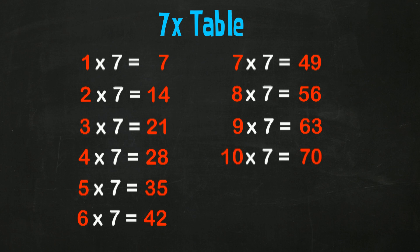10 7s are 70, 11 7s are 77, 12 7s are 84.